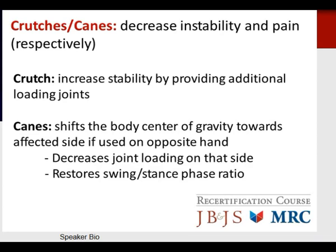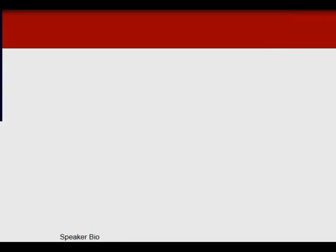Crutches and canes decrease instability and pain respectively. A crutch increases stability by providing additional loading joints, whereas a cane used on the opposite hand shifts the body center of gravity toward the affected side, resulting in decreased joint loading and helping restore the swing-stance phase ratio of gait.